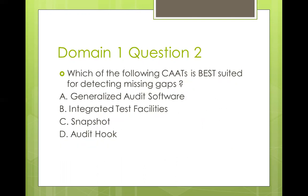Question two: which of the following is best suited for detecting missing gaps? Options: generalized audit software, integrated test facility, snapshot, or audit hook. Audit hook is used to detect irregularities before they go out of hand. Snapshot is a programming audit tool to check the execution of codes as they are running — the system takes a before and after image. ITF is used to apply test data to a production environment to determine the effectiveness of controls. Generalized audit software like ACL, IDEA, or Active Data can detect missing gaps, duplicates, and perform statistical analysis. The best answer is generalized audit software.